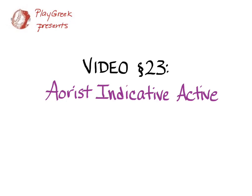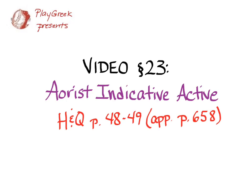This is the video to go with section 23 of Hansen and Quinn's Greek an Intensive Course, and it covers the aorist indicative active of thematic verbs that end in omega. You can refer to Hansen and Quinn on pages 48 and 49 for this material, and also the appendix on page 658.